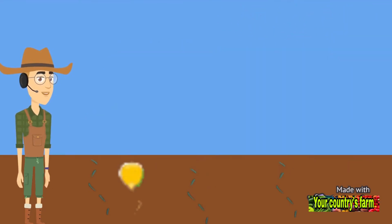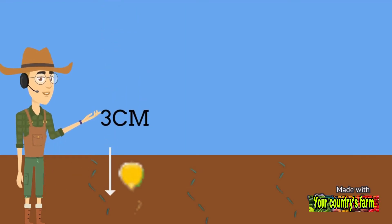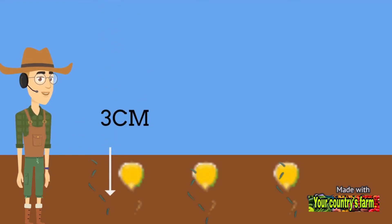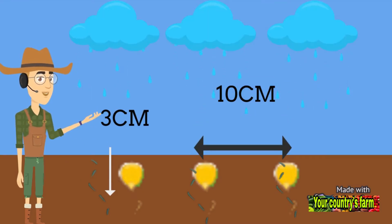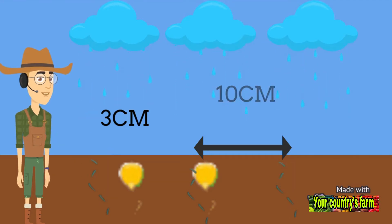The corn grains are planted in lines, in grooves, at a depth of 3 centimeters under the soil, and the distance between each grain must be about 10 centimeters. Maize is usually planted in early spring, after the danger of frost has passed.